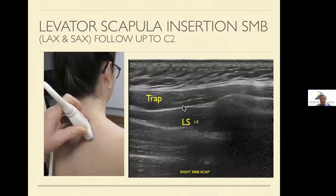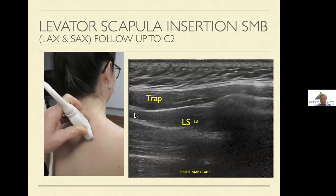Once you've completed the windshield wiper, I'll switch to a long axis view. At the superior medial border, I'll slide my transducer up and slowly dial it toward the C2-C3 area to get true long axis to levator scap. By doing that, you'll be able to evaluate this much better in terms of the entirety and functionality. This takes practice a few times but is well worth learning, because frequently you'll pick up pathology here that you weren't aware of on the short axis version.